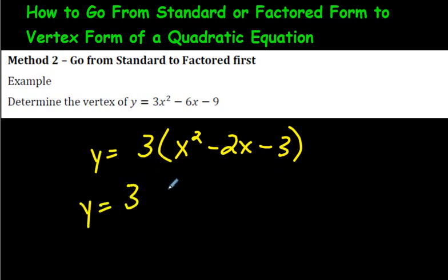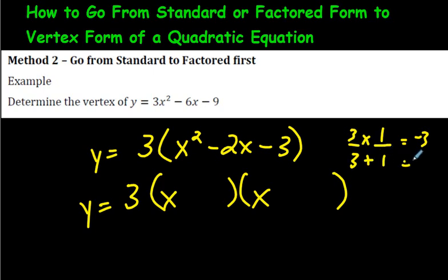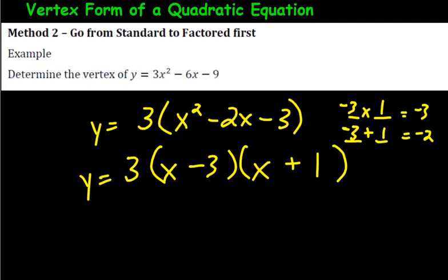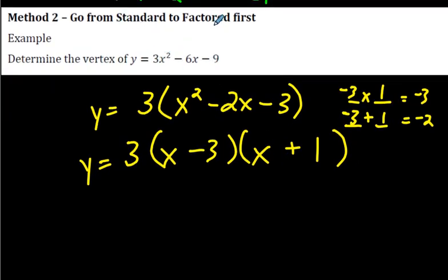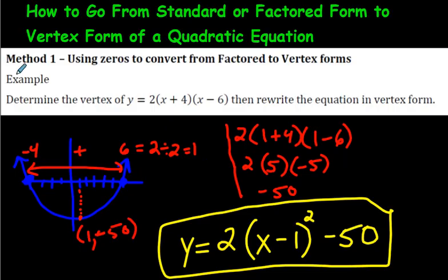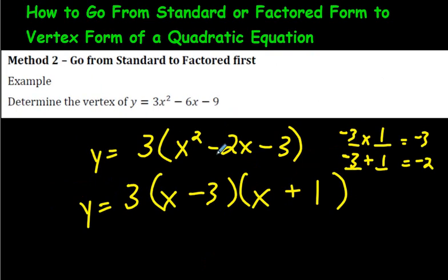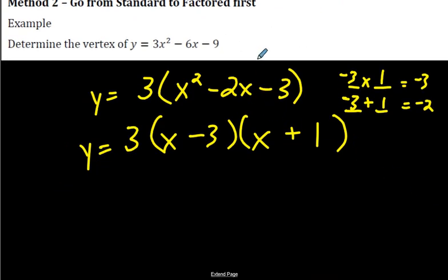Now let's factor the rest. What numbers multiply to make negative 3 but add up to make negative 2? There's 3 and 1. This 3 here is going to have to be negative because negative 3 times 1 is negative 3, and negative 3 plus 1 is negative 2. So we have 3(x - 3)(x + 1). All we've done so far is turn standard form into factored form first. Then we do exactly what I did on the first question.